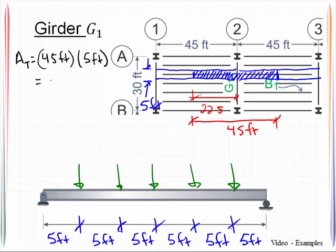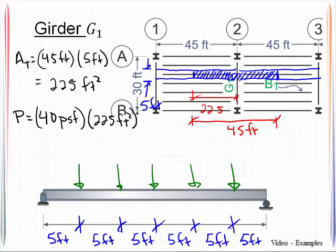So we can get this tributary area, A sub T, is 45 feet multiplied by the five foot tributary width. And that will be equal to 225 square feet. And so each of those individual point loads is computed as 40 pounds per square foot multiplied by 225 square feet. And that will compute out to be 9,000 pounds or 9 kips. And I will go ahead and write that on here.